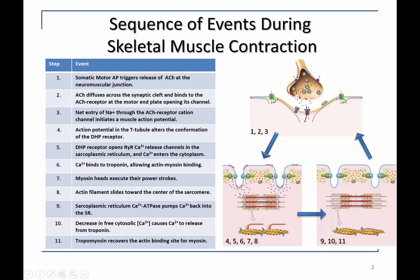That calcium binds to troponin and allows actin-myosin binding, because calcium binding to troponin allows tropomyosin to move away from myosin binding sites on the thin filament. The action of the myosin is to pull actin towards the center of the sarcomere, and as the sarcomere is shortened, the myofibrils shorten, which means the muscle shortens.